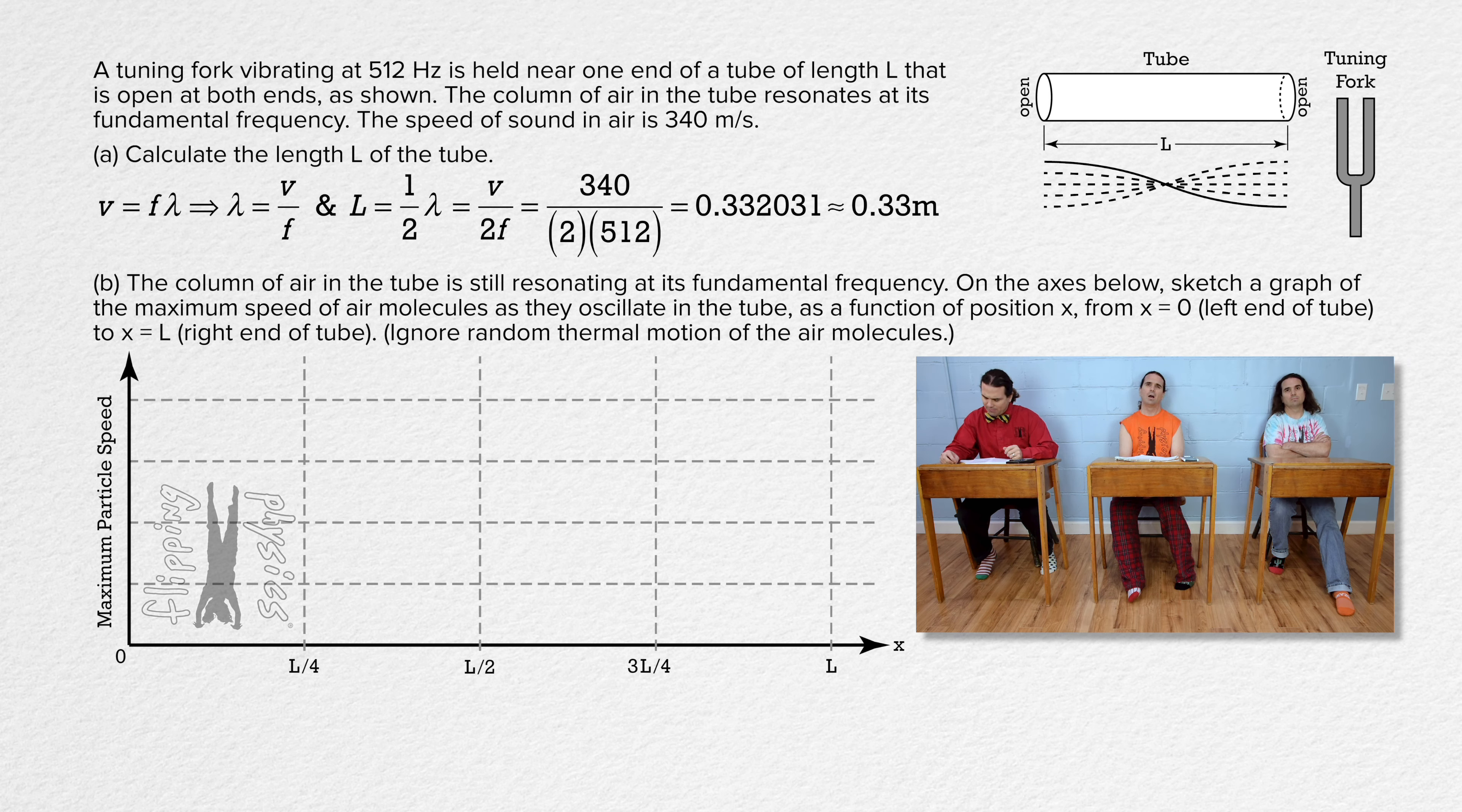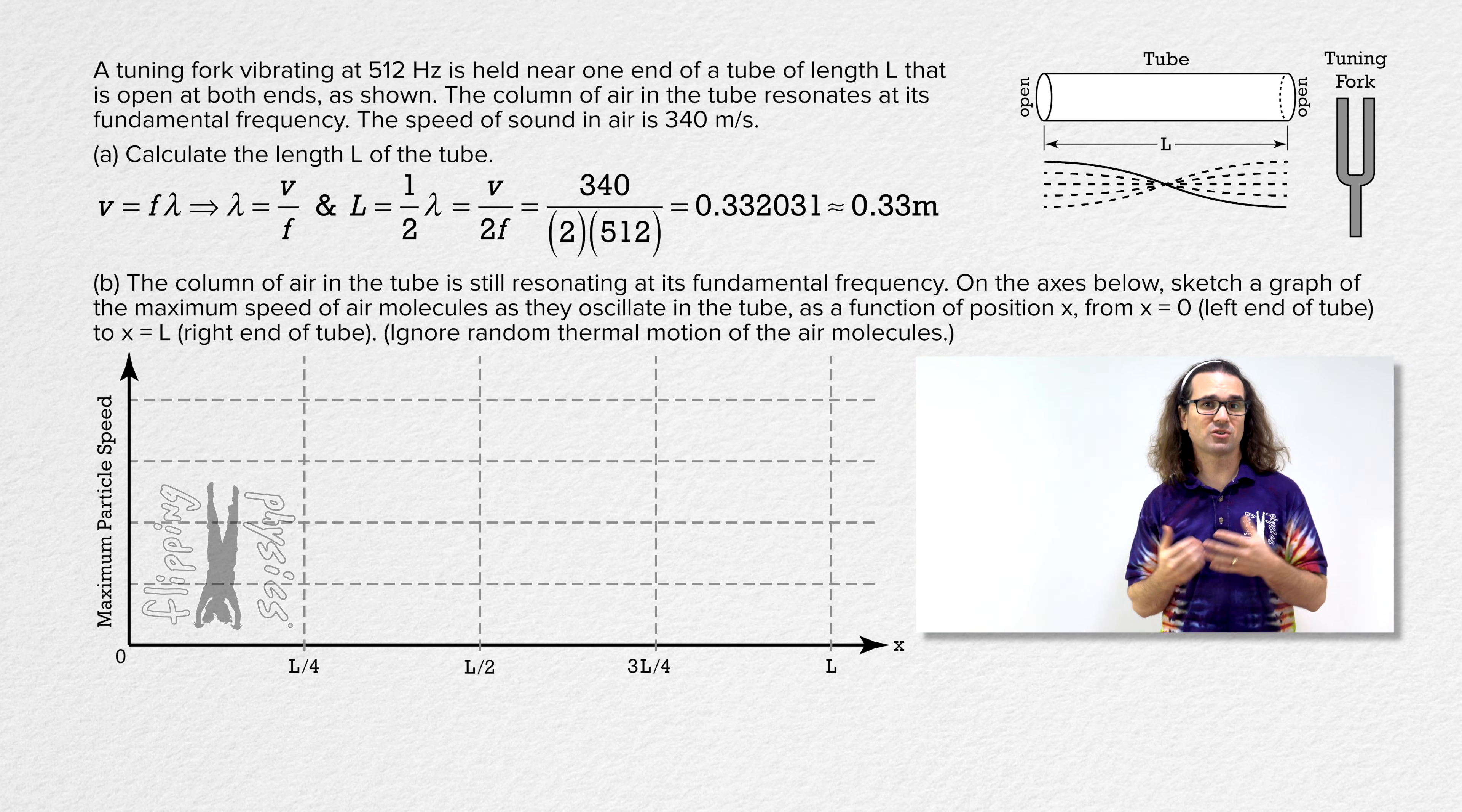Well, there is a blank graph with maximum particle speed on the y-axis and x-position in terms of L on the x-axis. So, how can we have different maximum particle speeds at different points on the graph? I think there should be just one single maximum particle speed because that's what maximum means, right? Oh, I know this one. At every location along the tube, air molecules are moving around at slightly different speeds, so each location has a maximum particle speed for all the air molecules at that location. Ah, that makes sense. Thanks. Very nice.